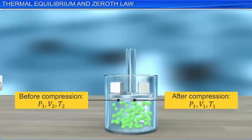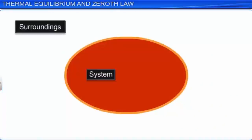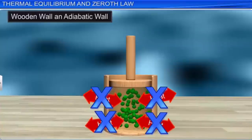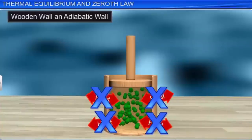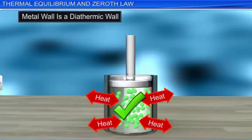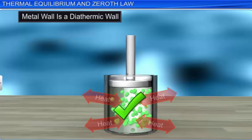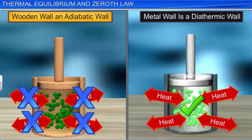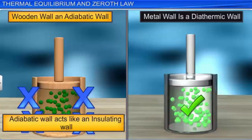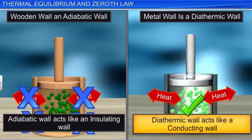Whether a thermodynamic system can exchange heat energy with its surroundings or not depends on the nature of the boundary. An adiabatic wall does not allow any flow of heat through it, whereas a diathermic wall allows the flow of heat through it. That means an adiabatic wall acts like an insulating wall and a diathermic wall acts like a conducting wall.